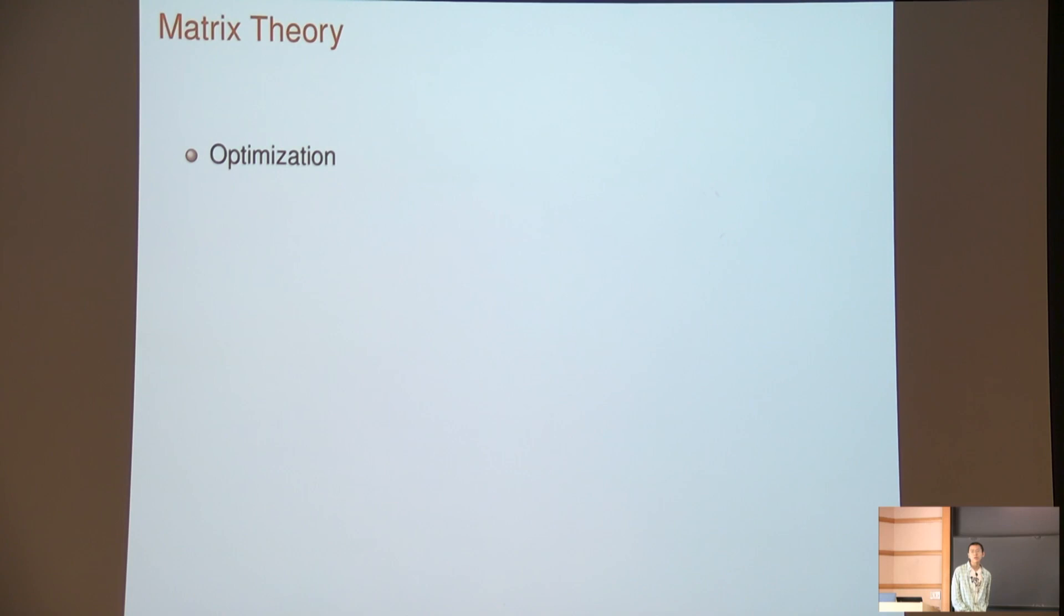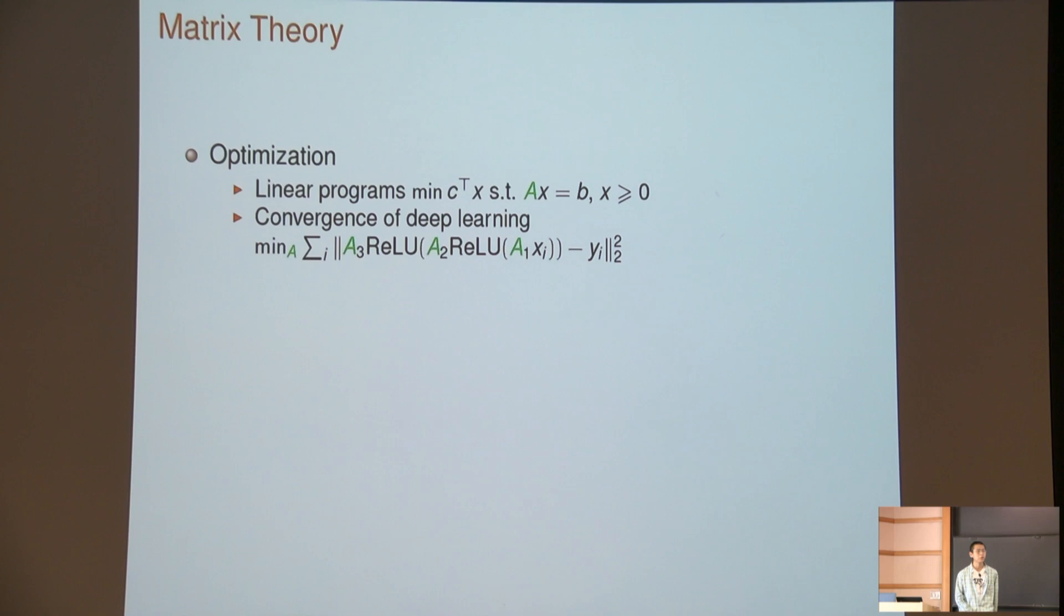The first topic I'm going to talk about is optimization. Of course, all the topics are related to matrices. You're given a matrix A and vectors b and c, and the goal is to minimize c transpose x such that Ax equals b and x is greater than or equal to zero. Also, if you have a bunch of matrices and data, you can ask if you can train different neural networks to reach the global minimum.